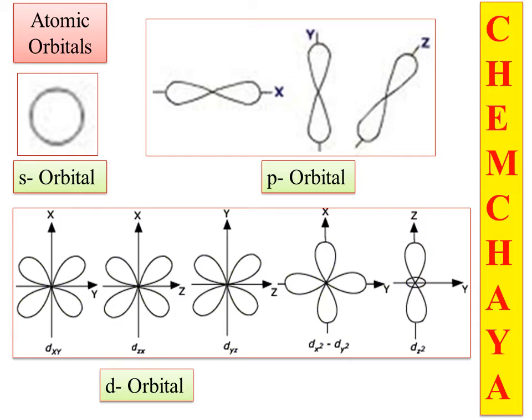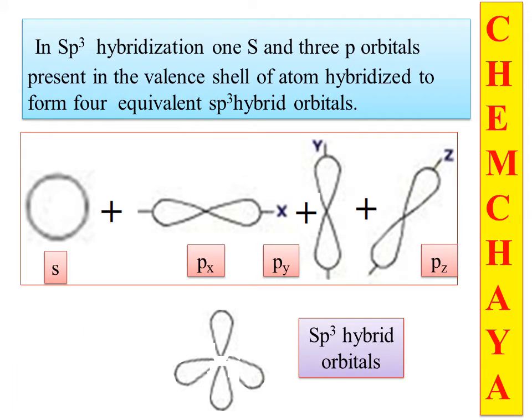Atomic orbitals combine together to form hybrid orbitals. Those hybrid orbitals then interact and overlap to form the molecular orbital and to form the molecule. This is sp3 hybridization. In sp3 hybridization, one s-orbital and three p-orbitals combine to give new hybrid orbitals.